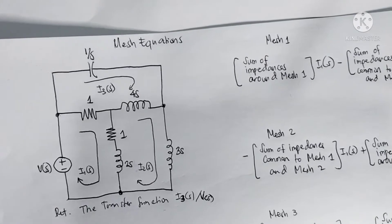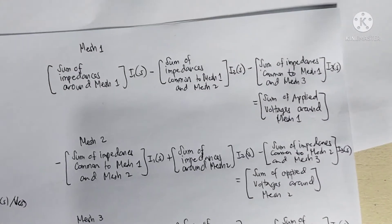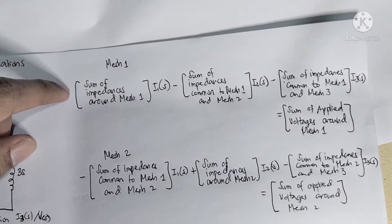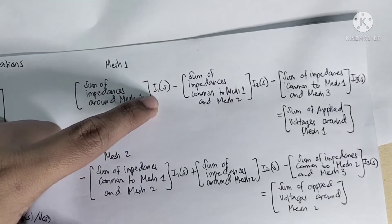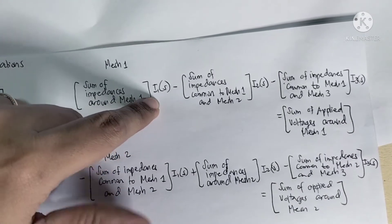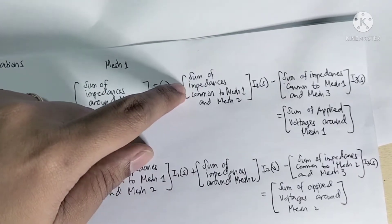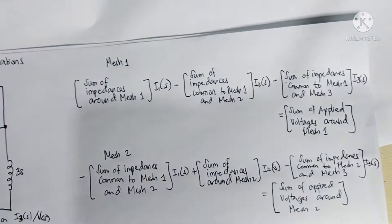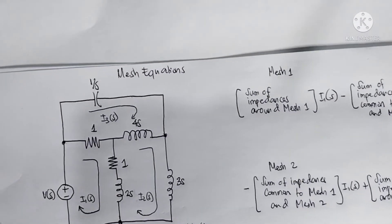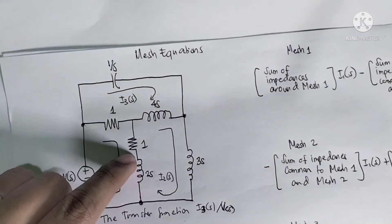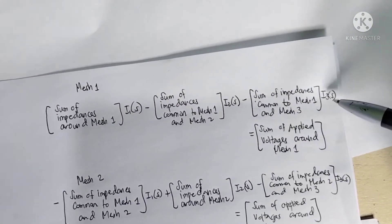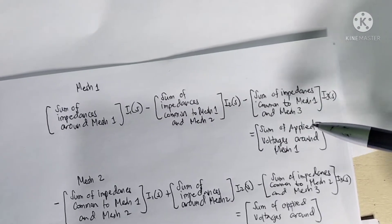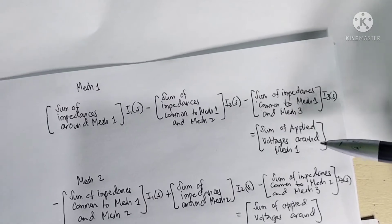Having three mesh equations for three meshes, we're going to use this pattern. At mesh one, the first term is the sum of impedances around mesh one times I1(s). The second term is minus the sum of impedances common to mesh one and mesh two. The third term is minus the sum of impedances common to mesh one and mesh three times I3(s).